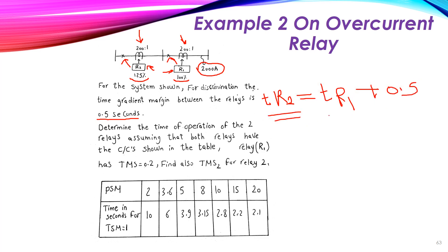From here you will understand the discrimination between the two relays — how can you discriminate between different relays. This relay operates this circuit breaker, and this relay operates this circuit breaker. For the discrimination, the time gradient margin between the relays is 0.5 seconds. This means that the time of R2 will be equal to the time of R1 plus 0.5 seconds, so R2 will operate after R1 by 0.5 seconds.